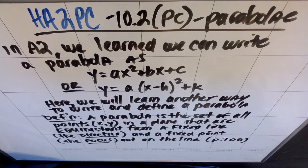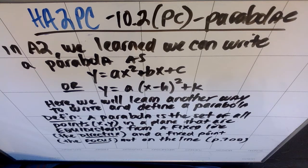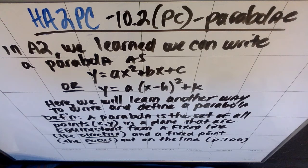What we're going to learn in 10.2 is a different way to write and define a parabola. It's the same u-shaped graph you've already talked about — we're just going to learn why the graph looks how it looks and the definition of it in terms of the points' distance to other things. On page 708, you'll see the definition.